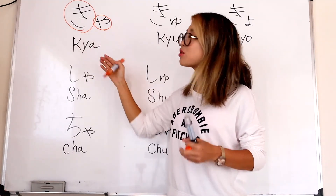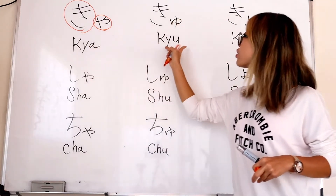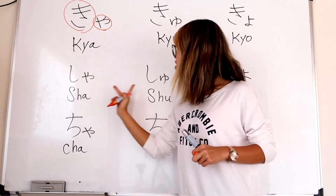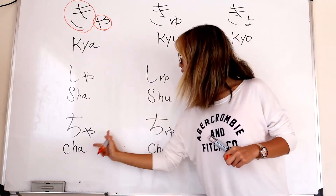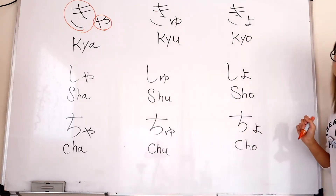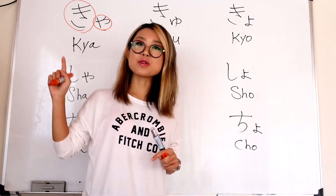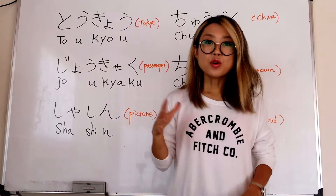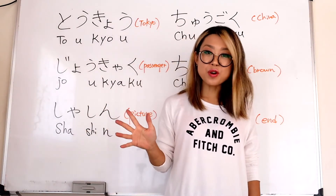So 'ki' and 'ya' together make 'kya'. The full set is: kya, kyu, kyo. Then sha, shu, sho. And cha, chu, cho.